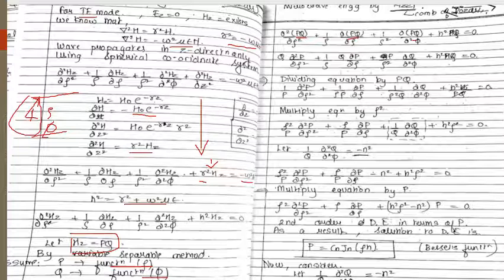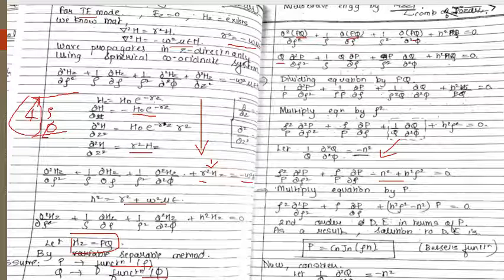Dividing the entire equation by PQ and then multiplying by rho-squared, we obtain a second-order differential equation in terms of P. Using the method of separation of variables, we set the phi-dependent part equal to minus n-squared — analogous to how we used minus a-squared and minus b-squared in the rectangular waveguide derivation. Multiplying through by P gives us the second-order ODE in P.